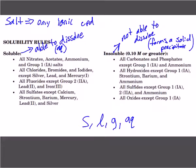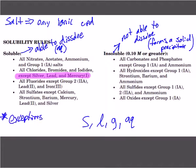All chlorides, bromides, and iodides are soluble except when they are with silver, lead, or mercury(I). So if you have any compound with chloride, bromide, or iodide, as long as the cation is not silver, lead, or mercury(I), it's going to be soluble. If it is silver, lead, or mercury(I), it's going to be insoluble — meaning a solid state of matter.